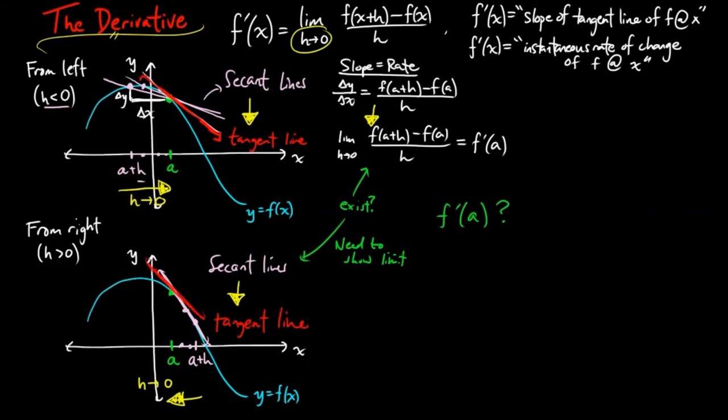We can zoom in around our point, (a, f(a)). Look at the neighborhood around it. We see that the red tangent line is a pretty good approximation of f at x equals a. And we talked about in class how the tangent line is the best linear approximation of a function near the point of tangency.